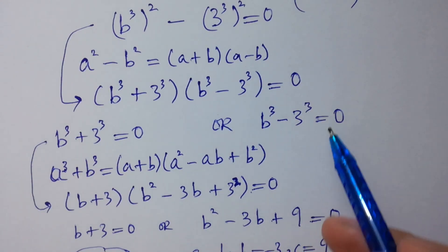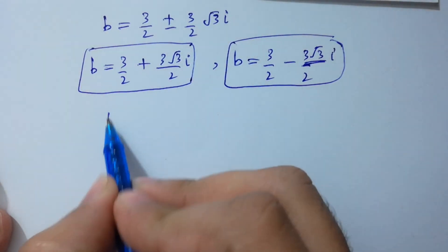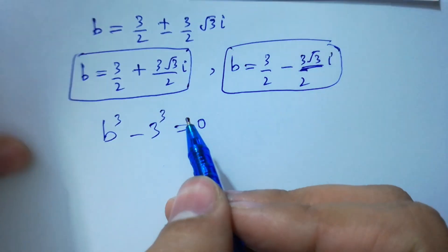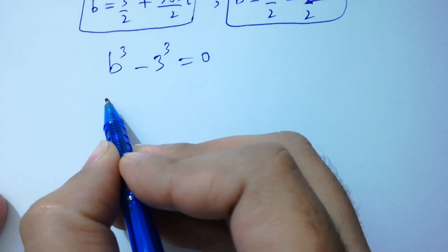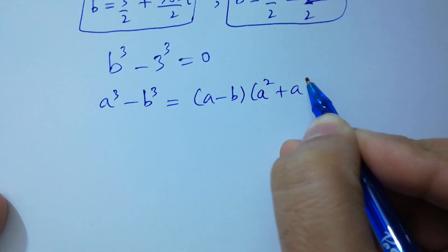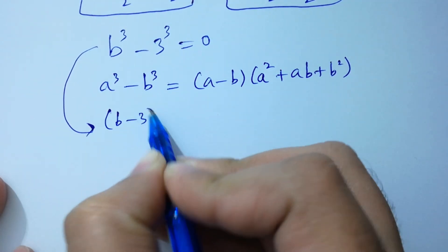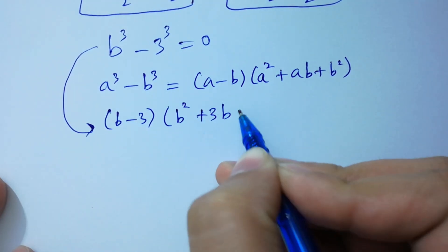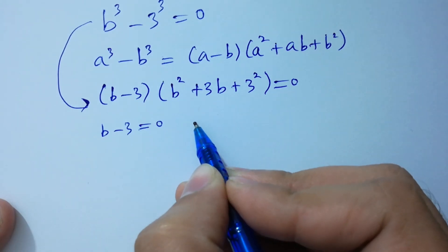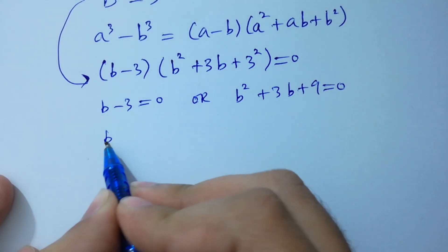Next, B cubed minus 3 cubed equals 0. We apply the formula A cubed minus B cubed equals A minus B times A squared plus AB plus B squared. Applying the formula gives B minus 3 times B squared plus 3B plus 9 equals 0. Therefore B minus 3 equals 0, or B squared plus 3B plus 9 equals 0.